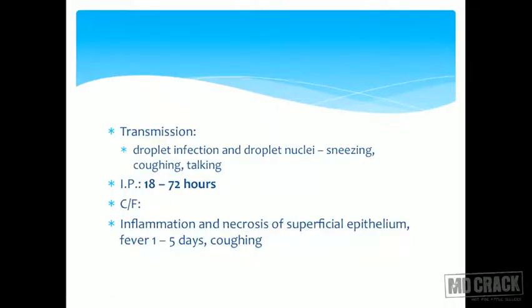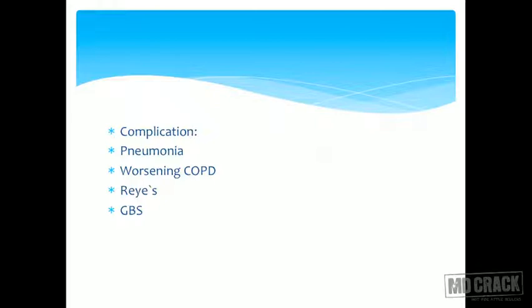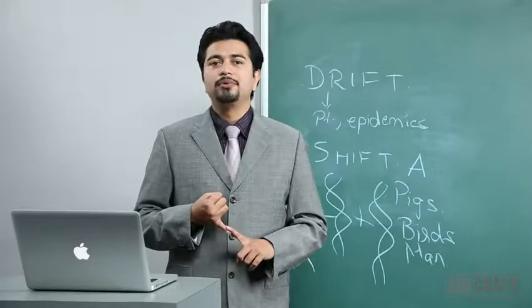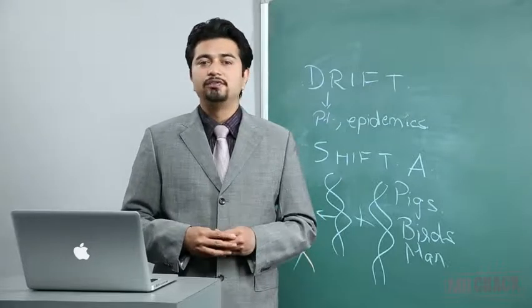Influenza is transmitted through droplet nuclei and droplet infection — sneezing, coughing, and talking are common modes. The incubation period is 18 to 72 hours. Clinical features include inflammation and necrosis of the superficial epithelium, cough, and fever. Complications include pneumonia.